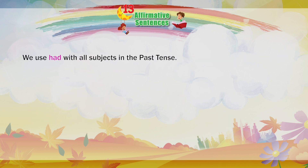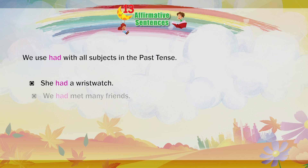We use 'had' with all subjects in the past tense. She had a wrist watch. We had met many friends. You had worn a nice shirt.